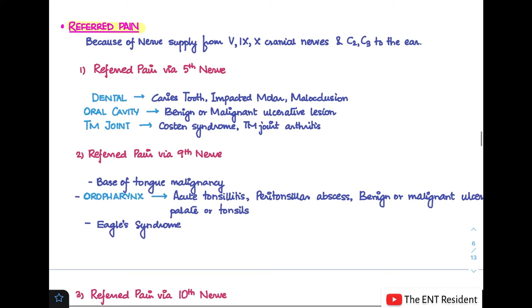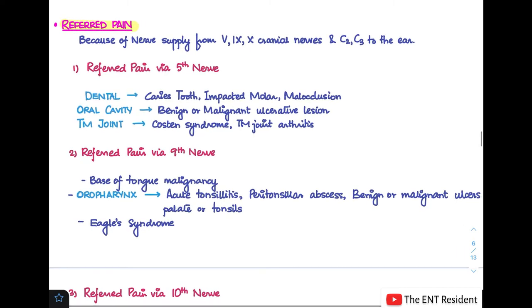Referred pain in ear occurs because the nerve supply of the ear is from various nerves which involve the 5th, 9th, and 10th cranial nerves, as well as the C2 and C3 nerves to the ear. These nerves also have varied supply to other regions, and this common supply is responsible for the referred pain that is seen in ear. What are the causes of referred pain in ear?